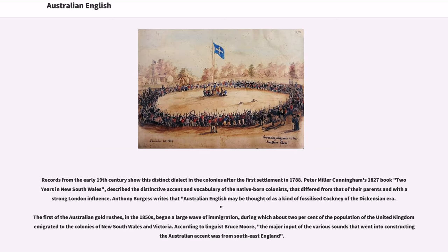Records from the early 19th century show this distinct dialect in the colonies after the first settlement in 1788. Peter Miller Cunningham's 1827 book Two Years in New South Wales described the distinctive accent and vocabulary of the native-born colonists, that differed from that of their parents and with a strong London influence. Anthony Burgess writes that Australian English may be thought of as a kind of fossilized cockney of the Dickensian era.